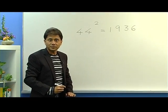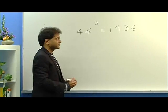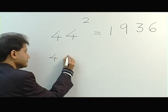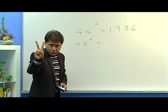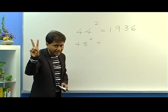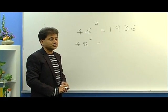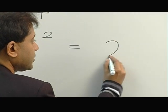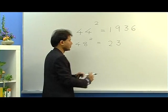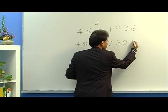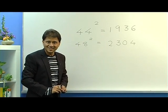Let's take another example: 48 squared. The difference from 50 is 2. We subtract 2 from 25. 25 minus 2 is 23, and 2 squared is 4, so we write 04. Isn't that easy?